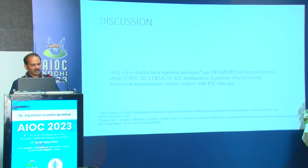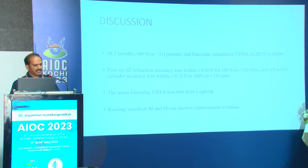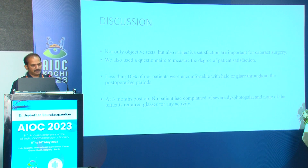Only a few studies have reported outcomes for toric multifocal IOL implantation in patients who had previously undergone unsatisfactory cataract surgery with a monofocal IOL. At three months, all patients achieved binocular cumulative visual acuity of 20/20 or better. Postoperative spherical equivalent refractive accuracy was within 0.5 D and refractive cylinder accuracy within 0.25 D in all eyes. Mean binocular near visual acuity was 0.01 logMAR. Reading speed at 40 and 60 centimeters showed consistent improvement over time. Less than 10% of patients were uncomfortable with halo and glare throughout the postoperative period, and at three months no patient had severe dysphotopsia complaints.